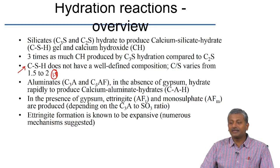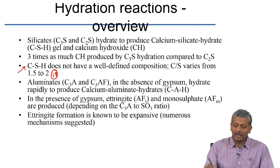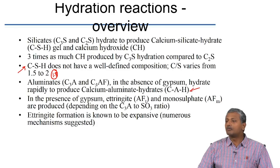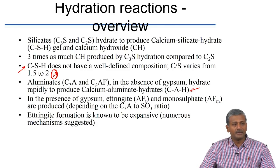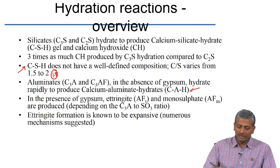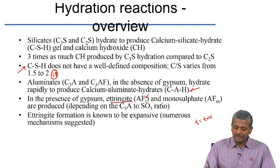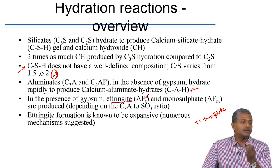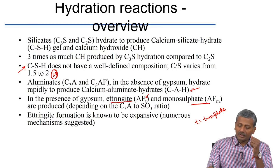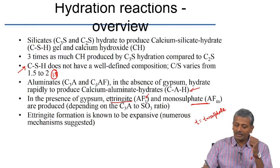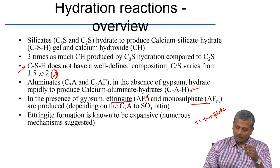In the absence of gypsum, aluminates would rapidly react to form calcium aluminate hydrate — a flash set reaction. In normal cement with gypsum present, the reaction leads to the formation of ettringite, written as AFT, where A is aluminate, F is ferrite (Fe₂O₃), and T is the trisulphate phase. Ettringite contains 3 sulphates and 32 molecules of bound water.